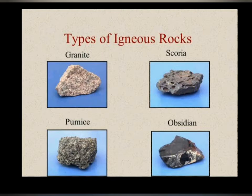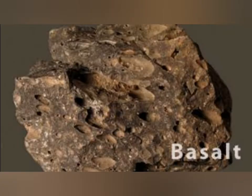Now let us study about the different types of igneous rocks in detail. There are four types namely basalt, granite, obsidian and pumice. Basalt is an igneous rock found by lava cooling on the earth's surface. It has fine grains in it. It is dense and dark in color.